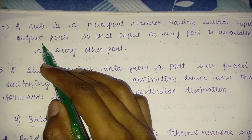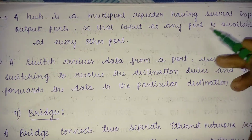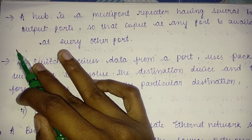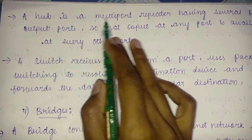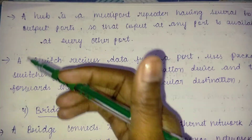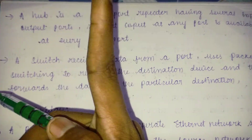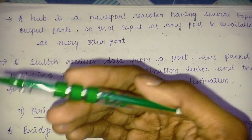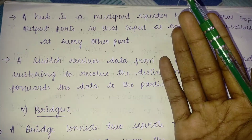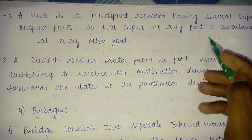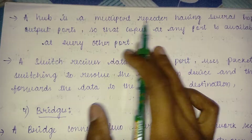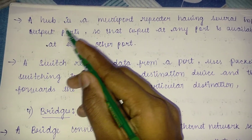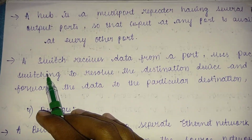A hub is a multi-port repeater. Unlike a repeater which has a single port, a hub has several input and output ports, so that input at any port is available at every other port. That is why it is called a hub.